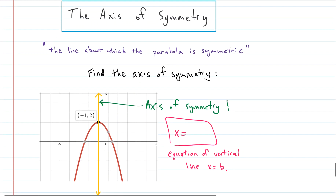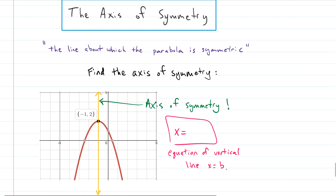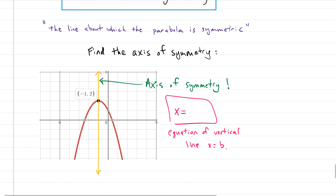The axis of symmetry is the line about which the parabola is symmetric. Given a graph with vertex (−1, 2), the axis of symmetry is a vertical line where every point has the same x-coordinate. A vertical line is defined by x equals that x-coordinate, so the axis of symmetry is x = −1. Done.